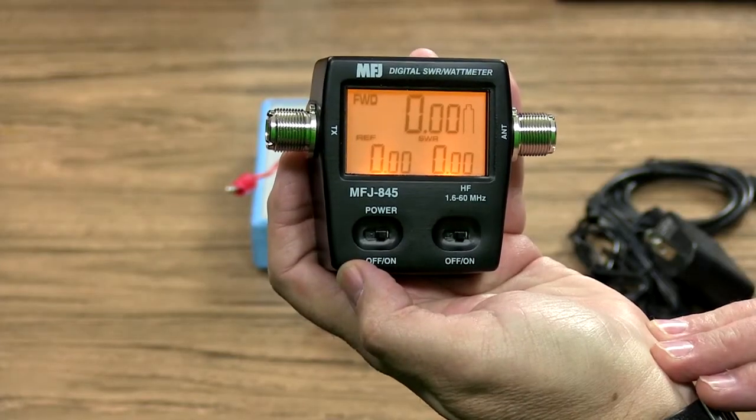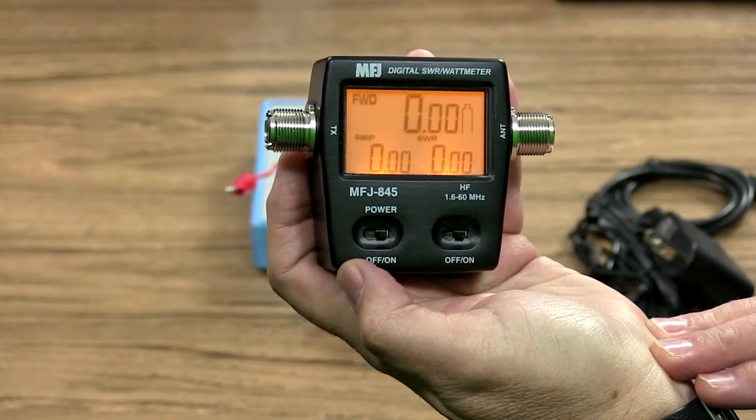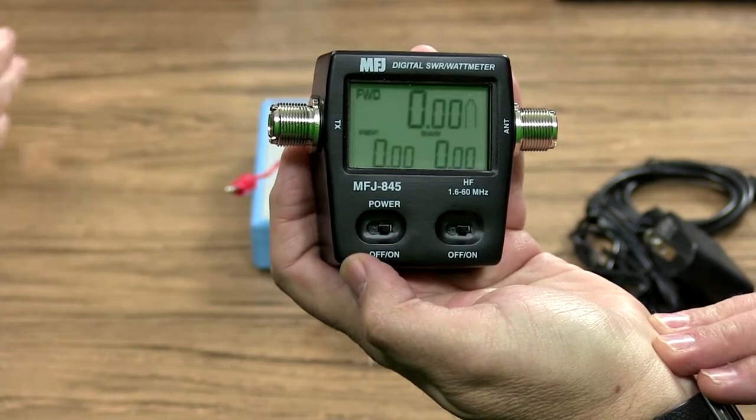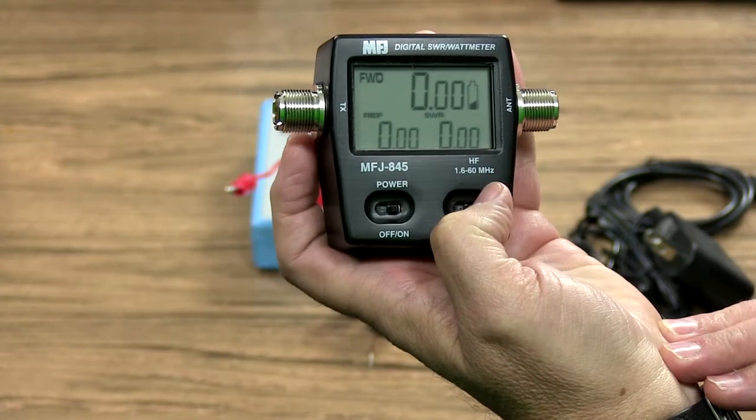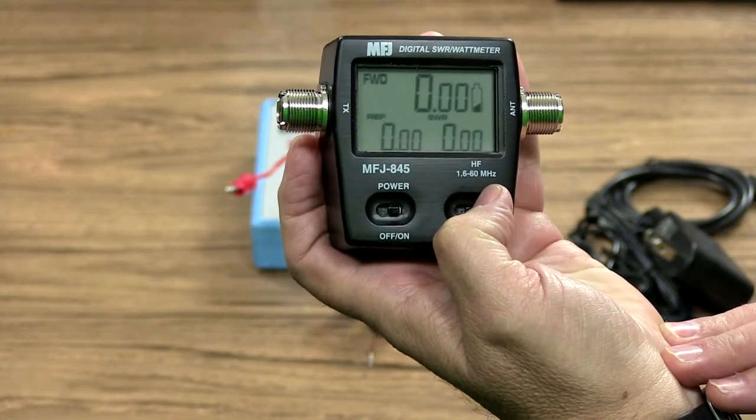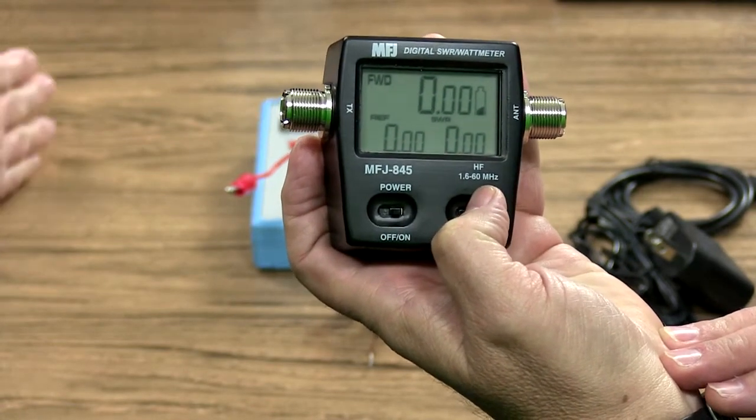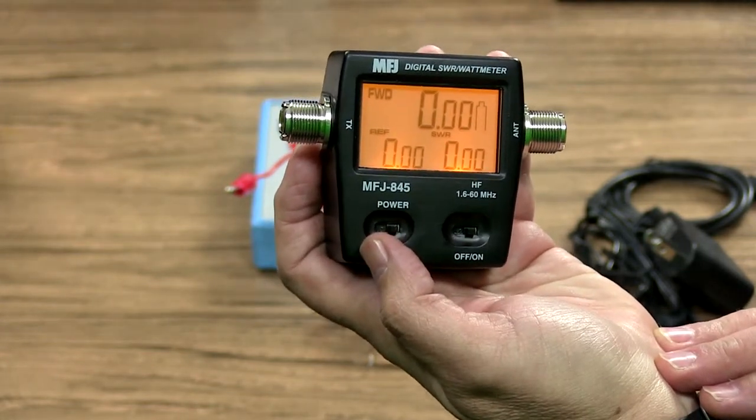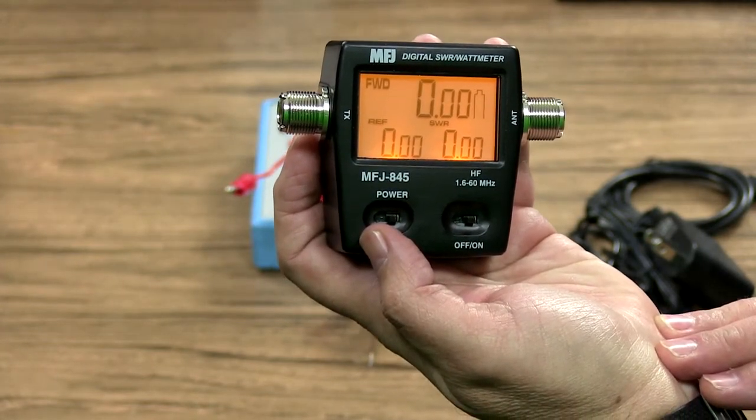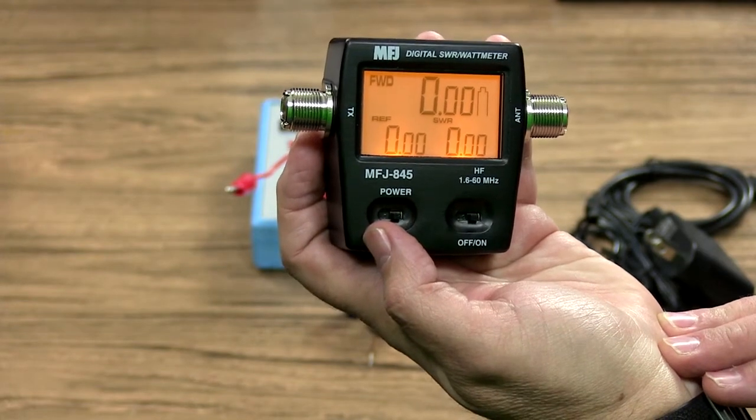This is the MFJ 845 that covers 1.6 to 60 megahertz. This one is the MFJ 847 that covers 125 to 525 megahertz with 120 watts. Oh cool.